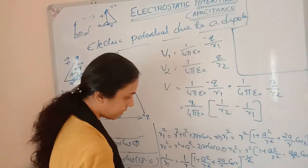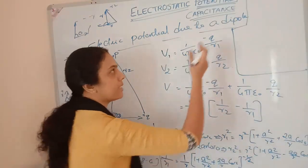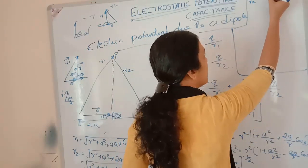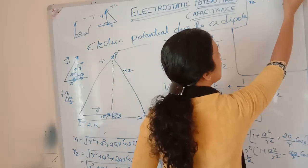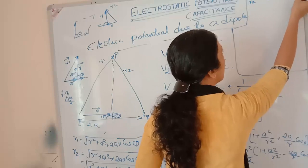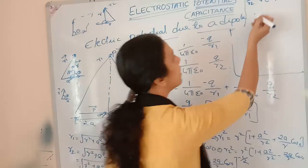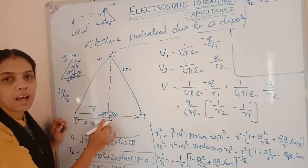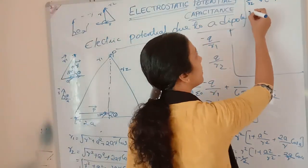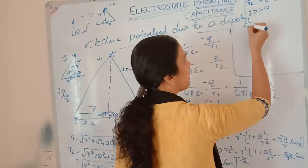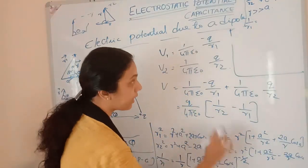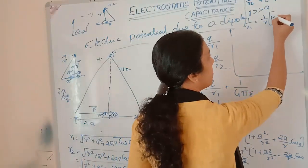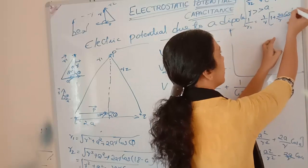Now we apply the approximation that r is very much greater than a, so the term a²/r² can be neglected. Using the binomial expansion — (1 + x)^n ≈ 1 + nx for small x — we get 1/r1 approximately equals (1/r)(1 + 2a/r cosθ)^(−1/2), which simplifies to (1/r)(1 − a/r cosθ) after approximation.